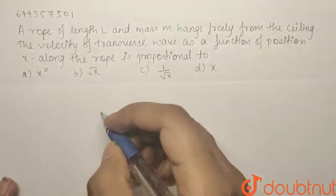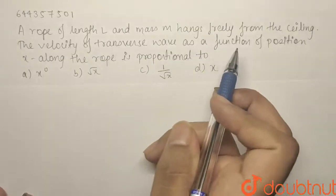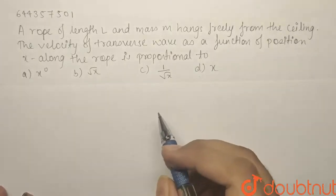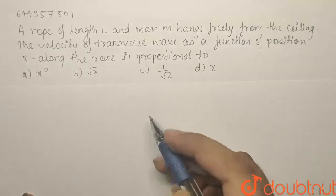Here we have a question from waves. A rope of length L and mass m hangs freely from the ceiling. The velocity of transverse wave as a function of position x along the rope is proportional to.